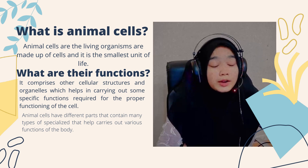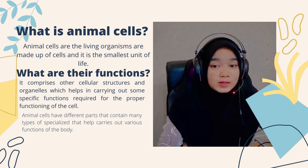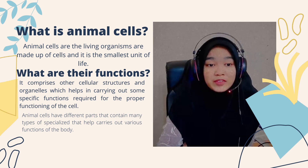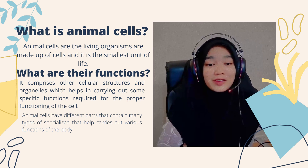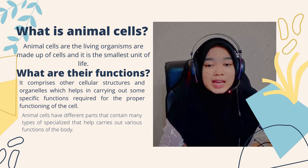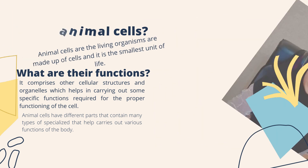What are their functions? It comprises other cellular structures and organisms which help in carrying out specific functions required for the proper functioning of the cell. Animal cells have different parts which contain many types of special structures that help in carrying out various functions of the body.